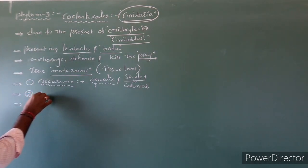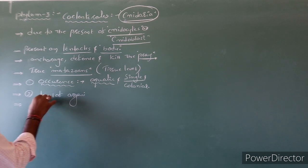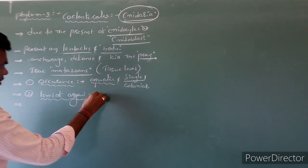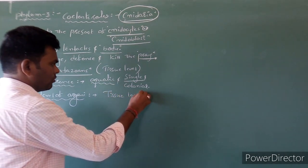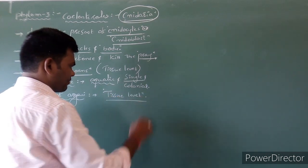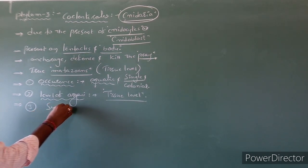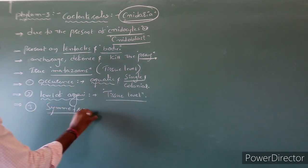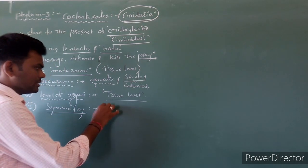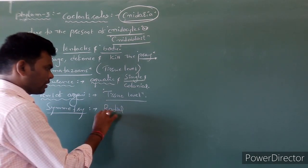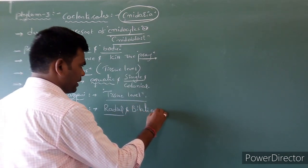The level of body organization is tissue-level organization. Next character is symmetry — some of the animals show radial symmetry and some show bilateral symmetry.